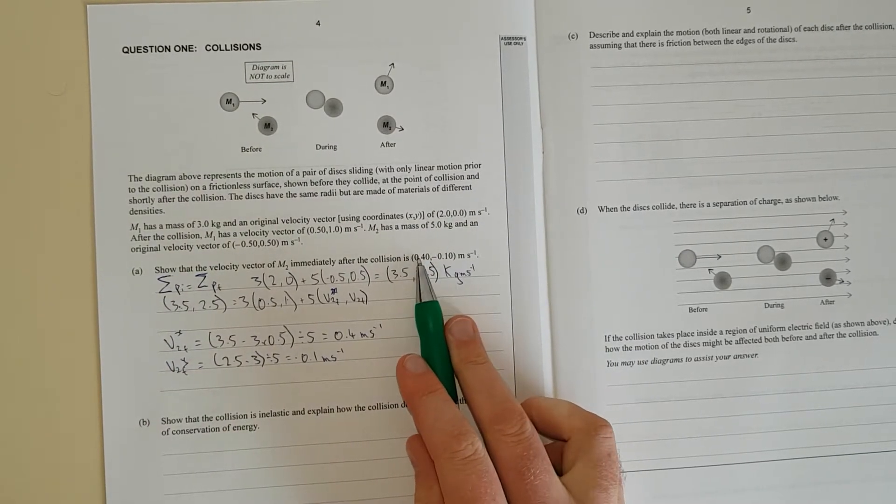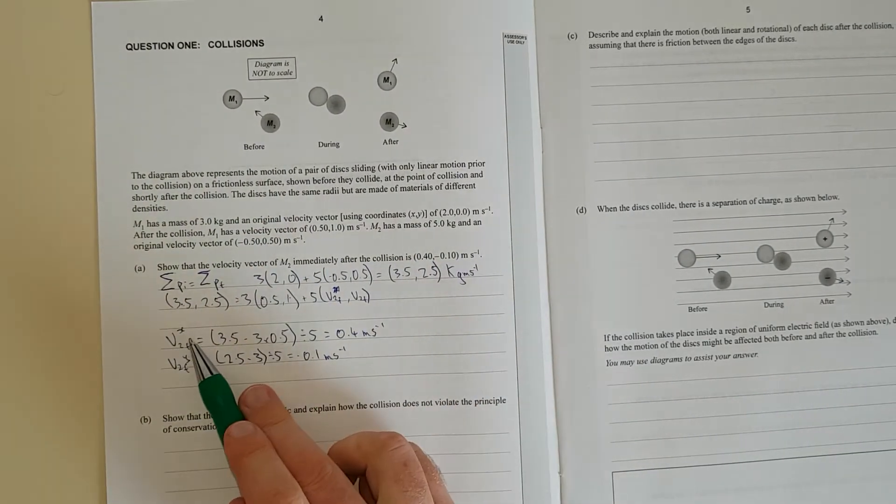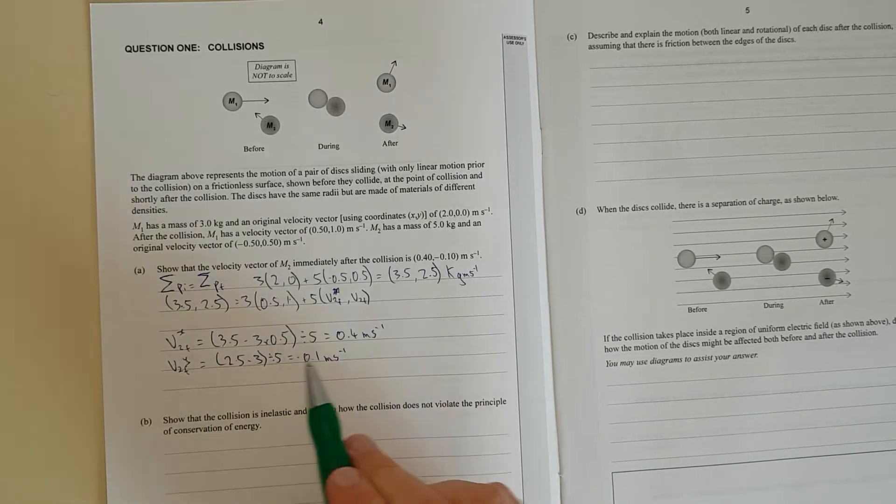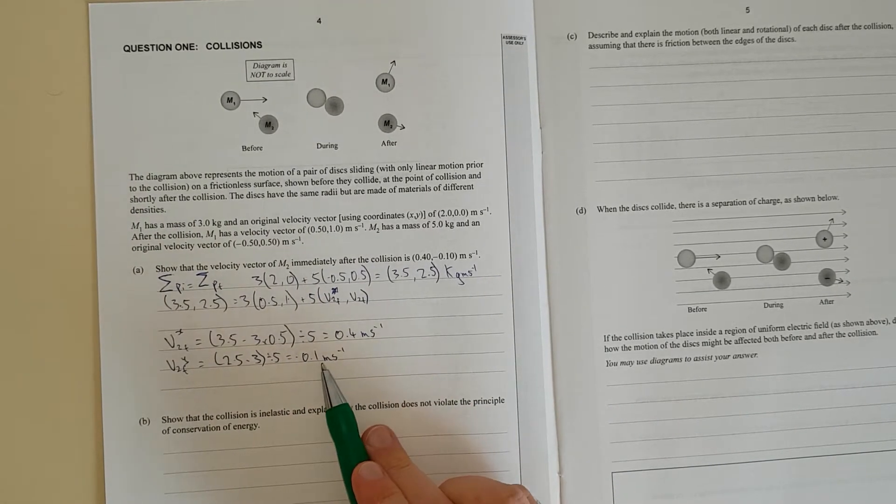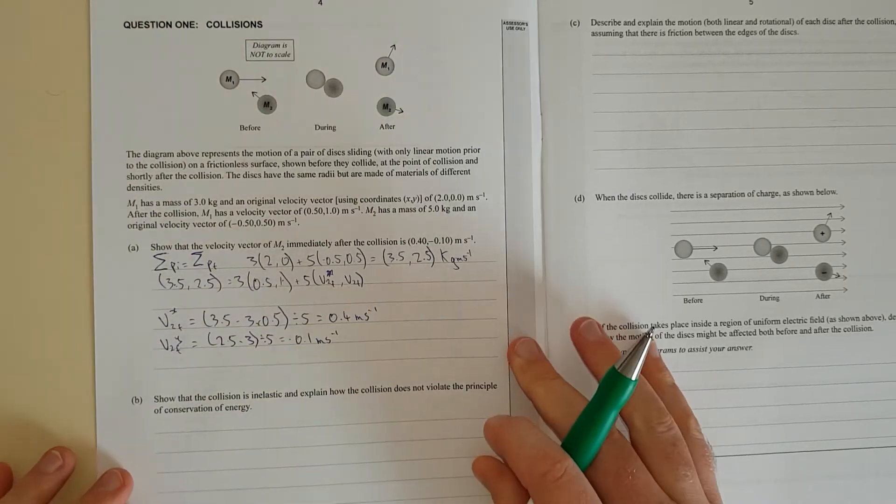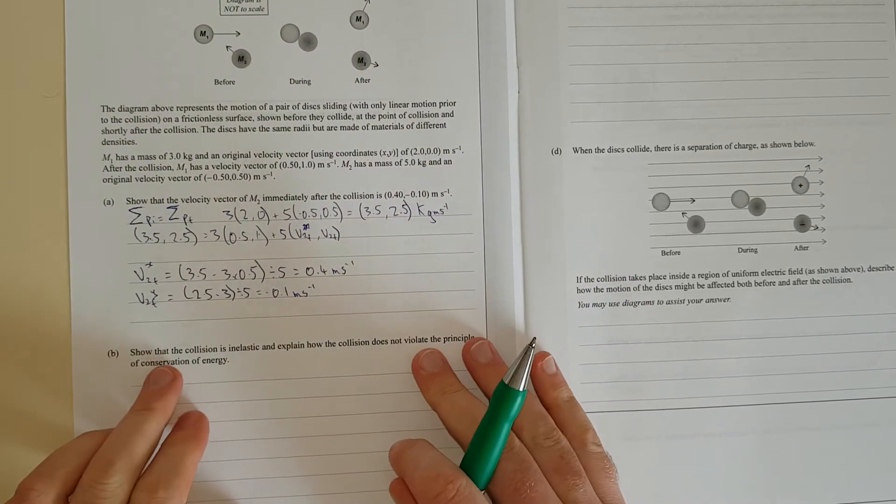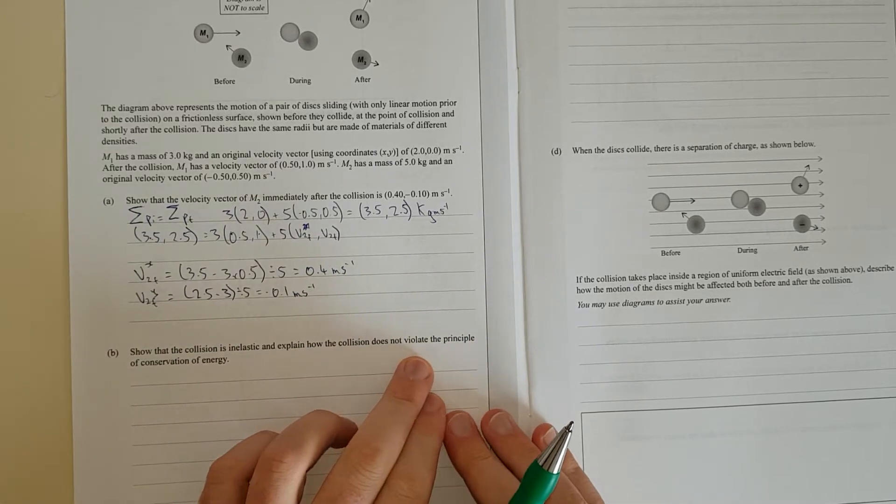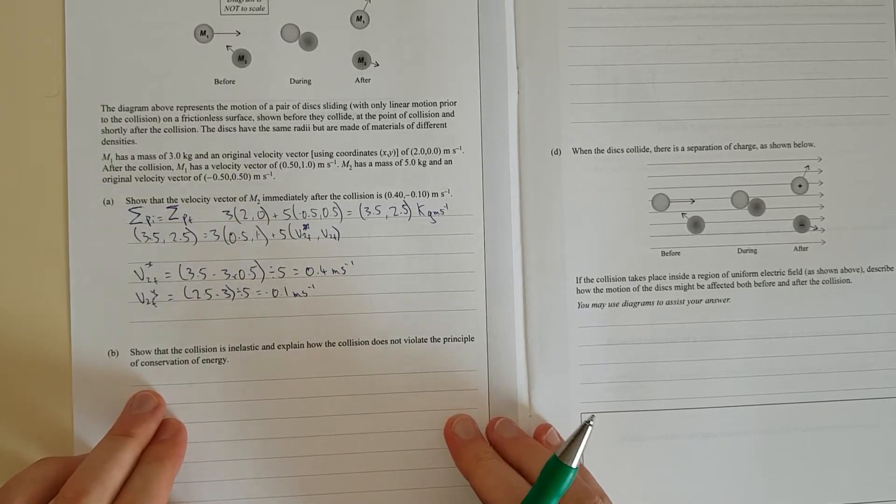And there we go, we just showed that after the collision, the velocity components of M2 are 0.4 for the x component and −0.1 for the y component. Show that the collision is inelastic and explain how the collision does not violate the principle of conservation of energy.